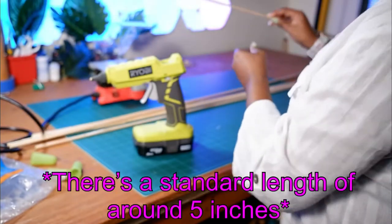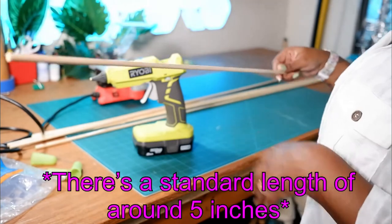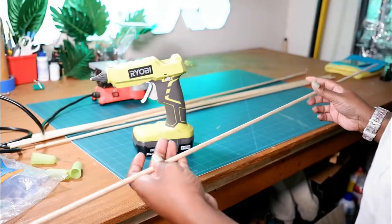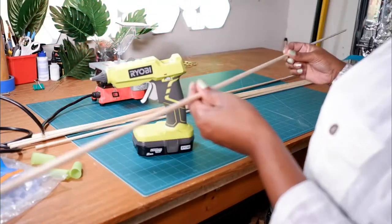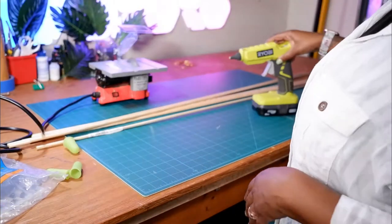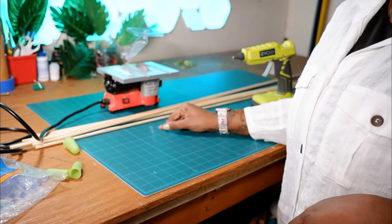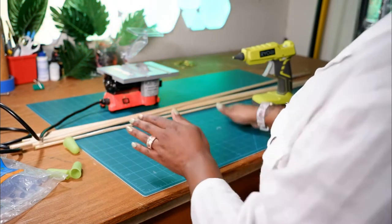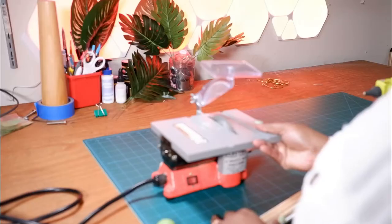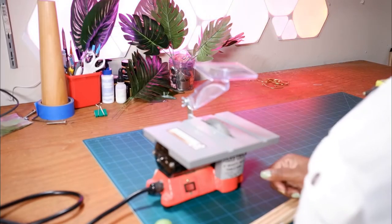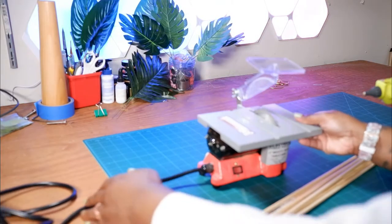And then I have quarter inch dowels here. We're going to need to cut these down to size so that they fit my two by two board. So I'm going to be using my little table saw, but you guys can always just break them and sand down the ends later on.